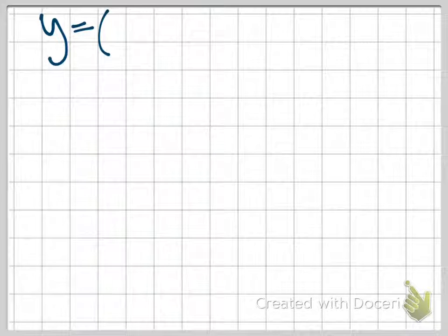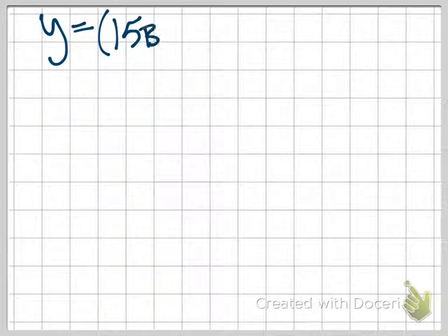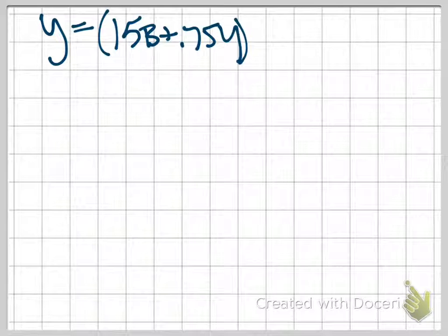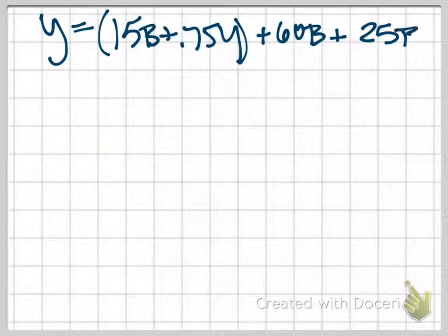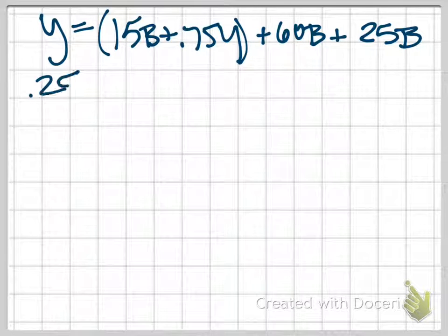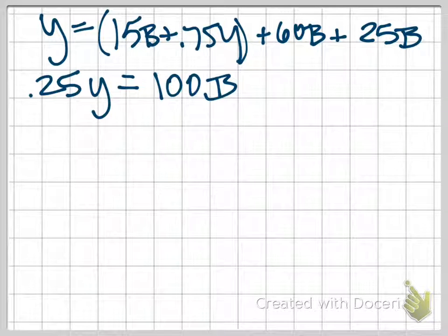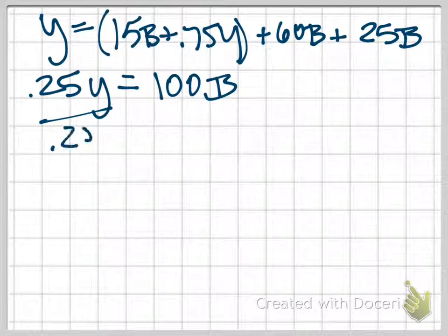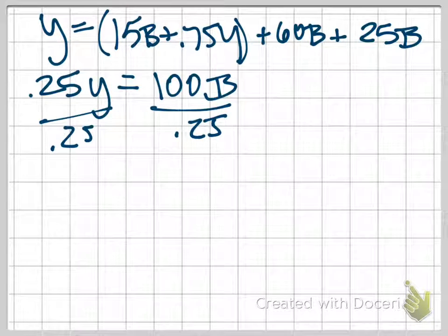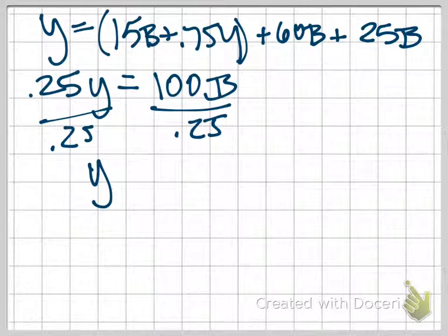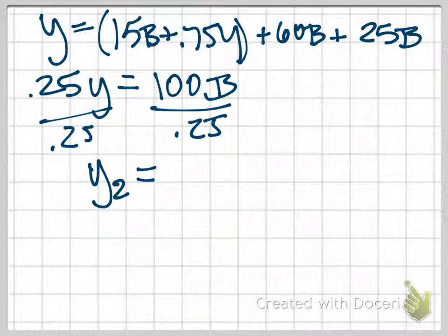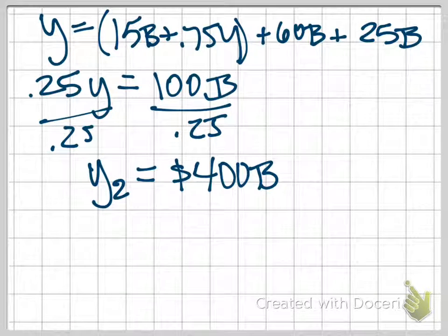Originally, our level of government spending was $125 billion. If we are decreasing that by $100 billion, then our new level of government spending is only $25 billion. We're going to use the same process as before but with this new level of government spending to solve for our equilibrium. Our C is that $15 billion plus 0.75Y. Our investment spending didn't change, so that's still $60 billion. And our government purchases decreased, so now it's only $25 billion. If we combine all of this, we would get 0.25Y equals, this time we only have $100 billion on the right-hand side of our equation. I divide both sides by 0.25, and I find that now my Y, I'm going to call this Y2, equals $400 billion.